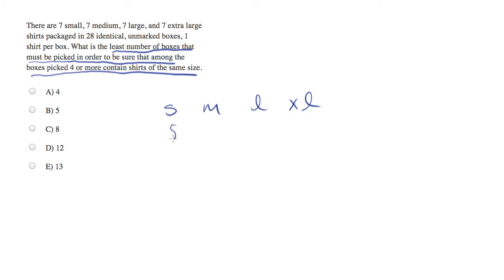Okay. I have to pick a fifth box. So I'm going to have to start doubling up now. So I'm going to pick a small, medium, large, and an XL. I'm doing as badly as I possibly can. I have the smallest number of matches.